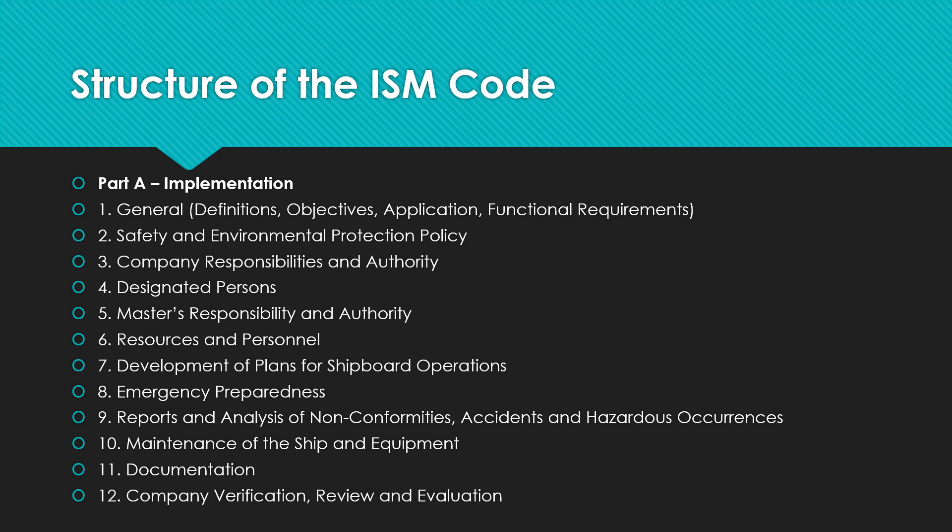Part 3 covers company responsibilities and authority — if the entity responsible for the operation of the ship is other than the owner, the owner must report the full name and details of such entity to the administration or flag state. Chapter 4 covers designated persons: to ensure safe operation of each ship and provide a link between the company and those on board, every company must designate a person — known as the Designated Person Ashore, or DPA — having direct access to the highest level of management.